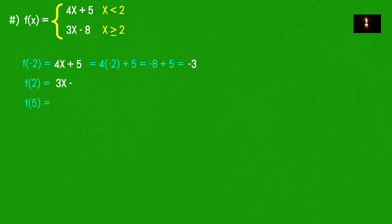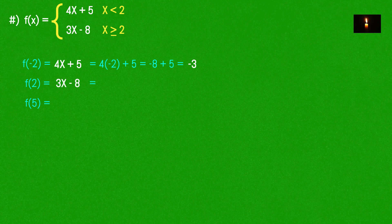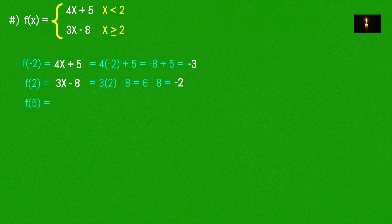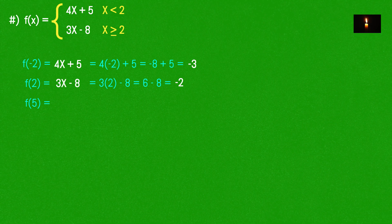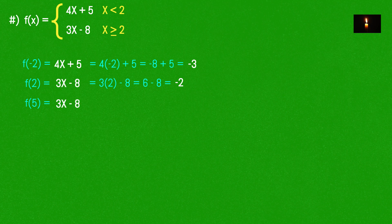The second piece is 3x - 8, equal to u. With x = -2 to 4 range. For f(5), we use 3x - 8, so x = 5: 3(5) - 8, which equals u.